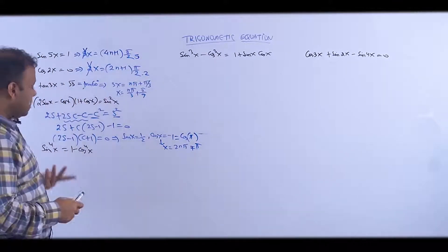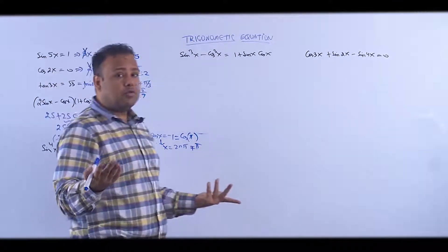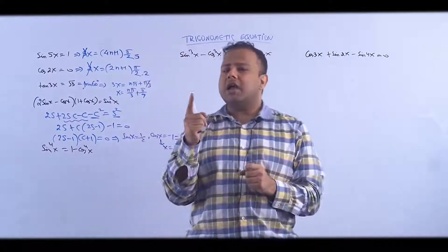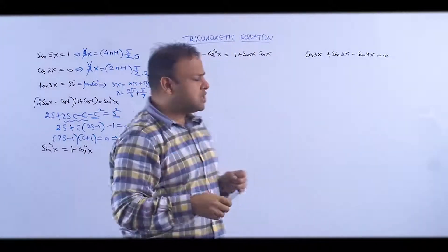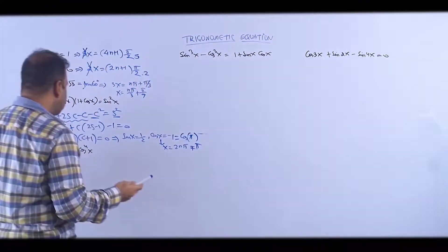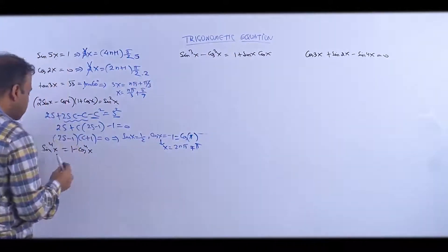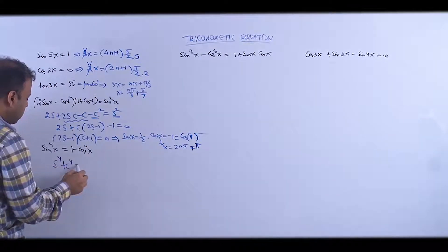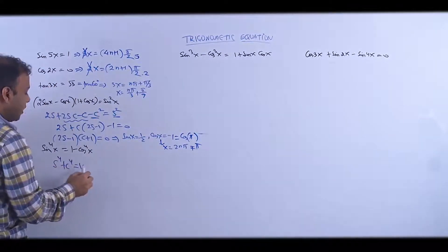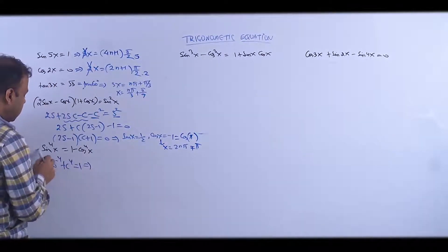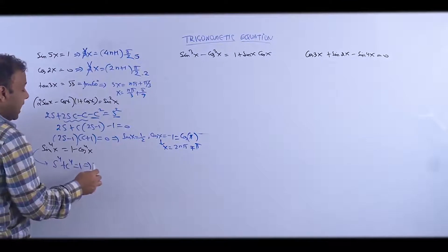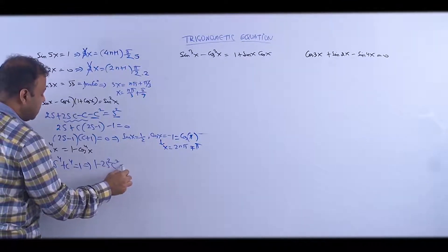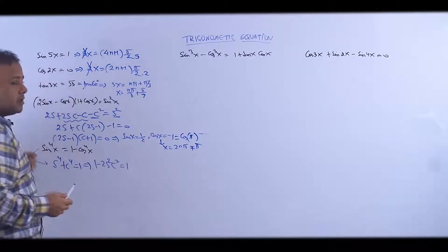Next: sin⁴x + cos⁴x. Kuch yaad aaya? sin⁴θ + cos⁴θ = 1 - 2sin²θcos²θ. So we convert the equation to sin⁴x + cos⁴x = 1, which becomes 1 - 2sin²θcos²θ = 1.